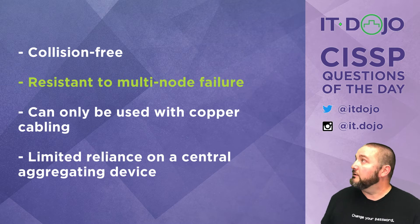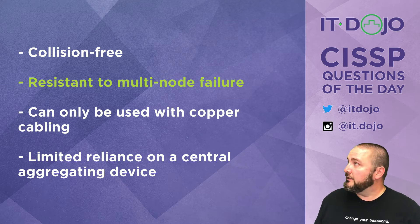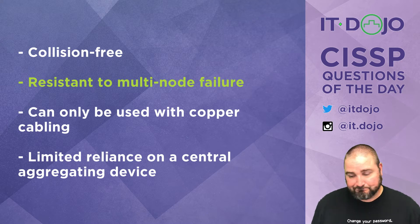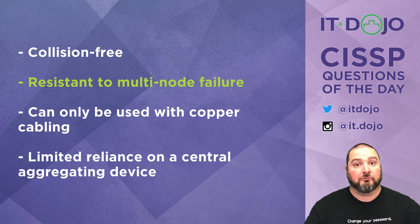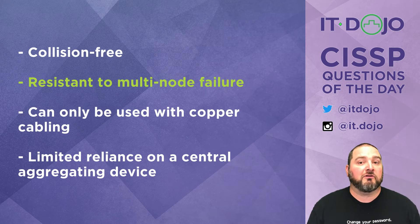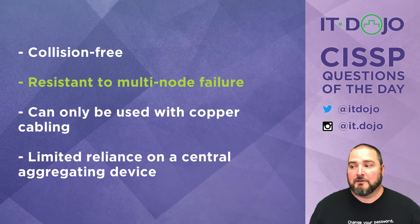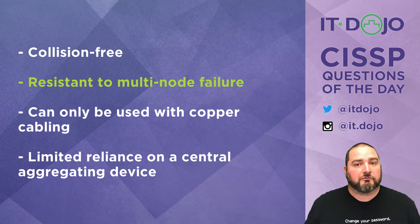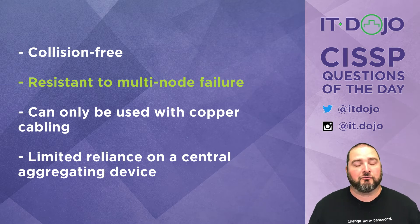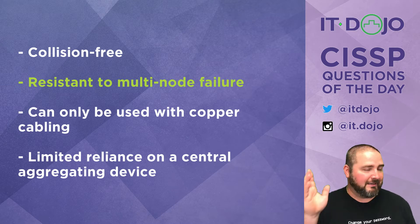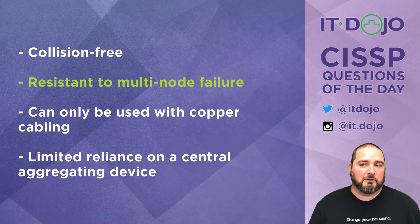The last answer choice says star topologies have limited dependence upon an aggregating device — that's unfortunately not true. In a star topology there's typically some device to which all the spokes connect, and if that device becomes unavailable, all nodes get disconnected. Think about an ethernet switch: if you've got 20 computers plugged in and the switch fails, all 20 can no longer communicate.